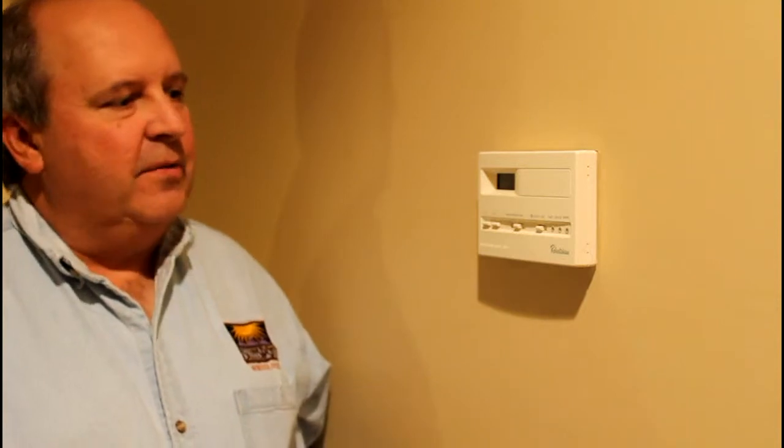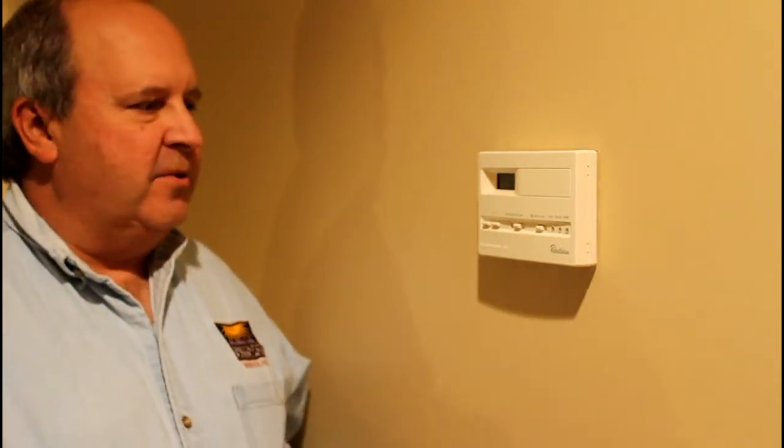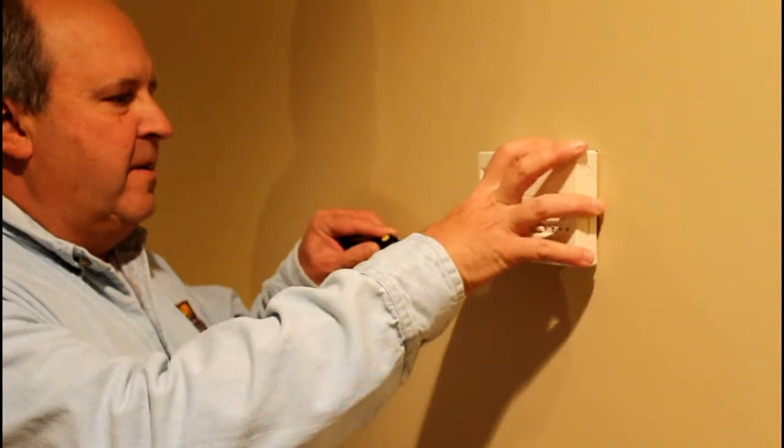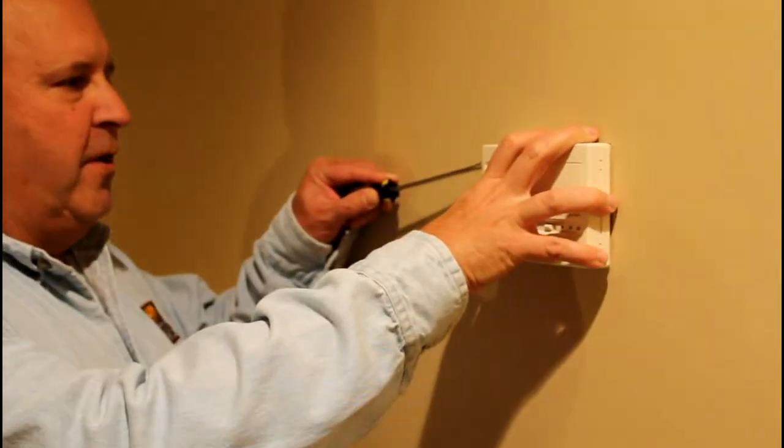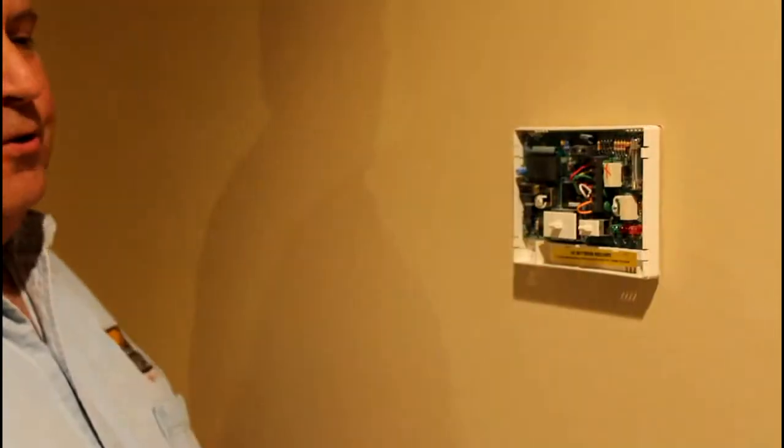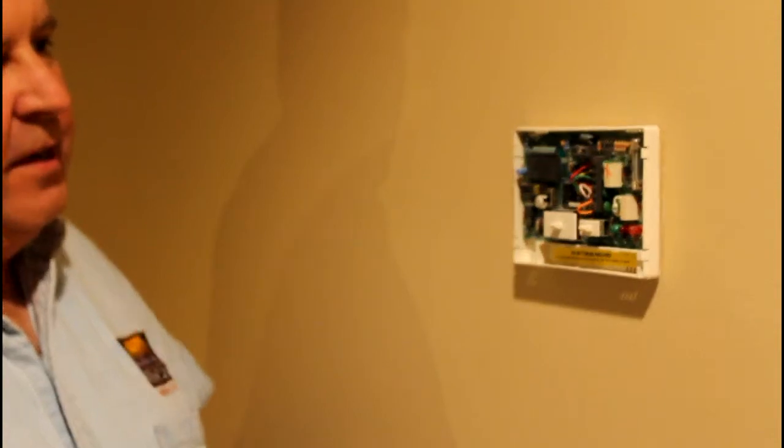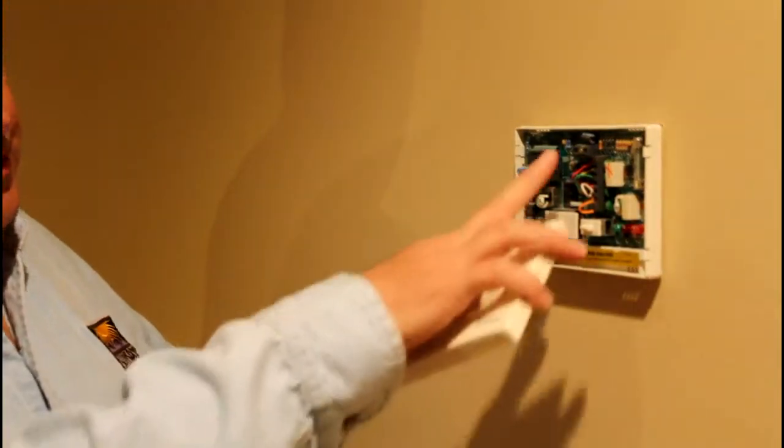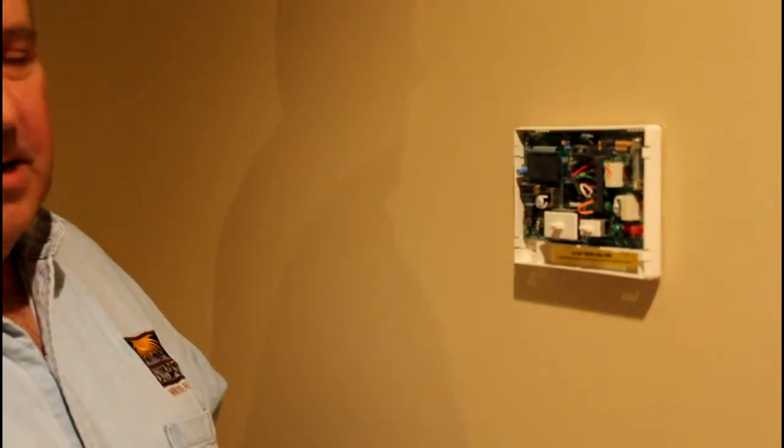Alright, the first thing we're going to have to do is take the cover plate off of the older thermostat. You'll notice there's no mounting screws. They're all hidden underneath. There's typically little tabs on the sides where you can push in with a screwdriver, release those. And there's our cover plate in the interior. These are our mounting screws. This is where all our wiring is coming in.